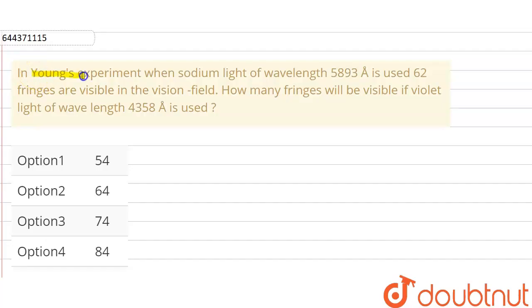The question is, in Young's experiment, when sodium light of wavelength 5893 angstrom is used, 62 fringes are visible in the vision field. How many fringes will be visible if violet light of wavelength 4358 angstrom is used?